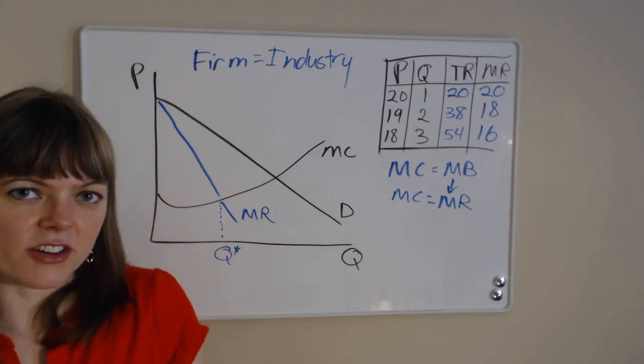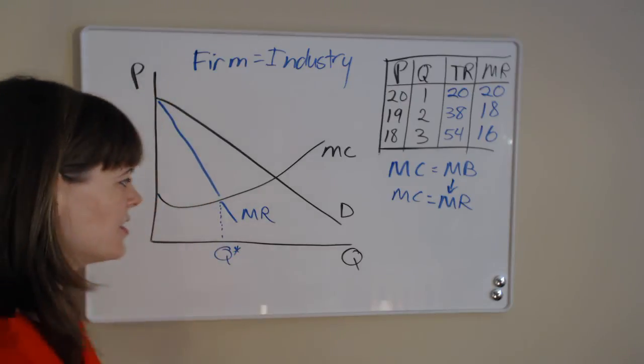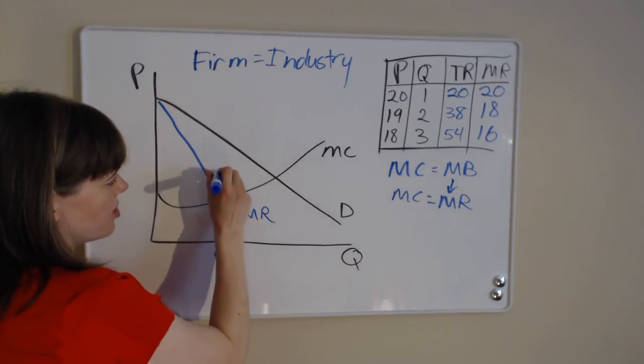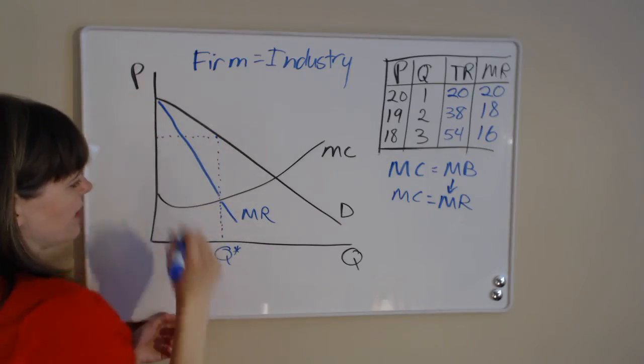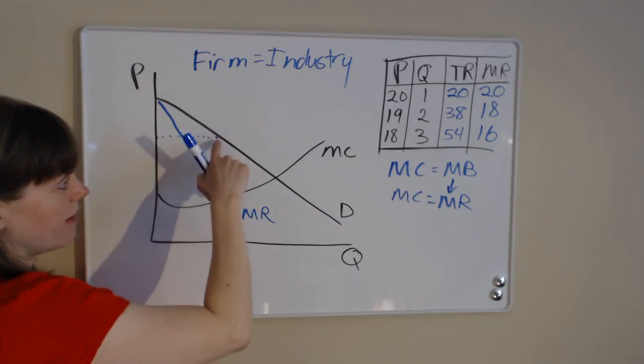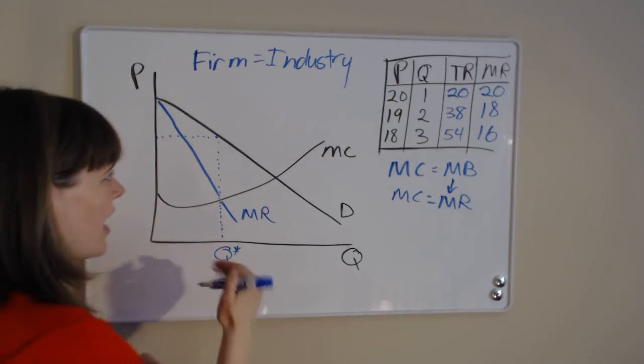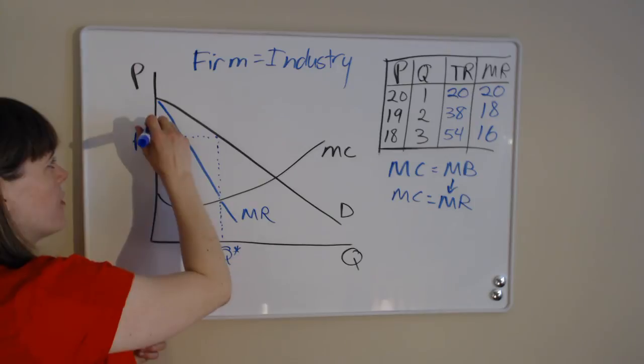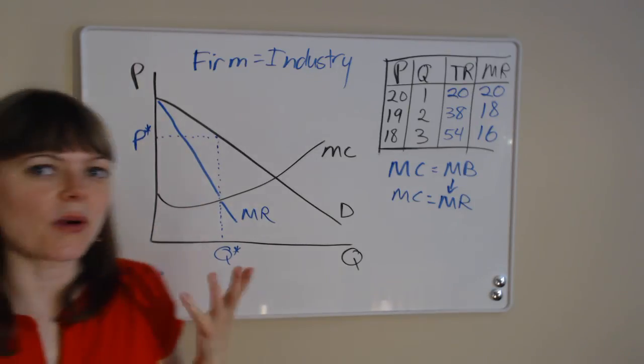So what price are they going to charge at that quantity? Well, they're going to charge the highest price possible. That's always what monopolists do. So the price they're going to charge is going to be way up here on the demand curve to sell all these products. If they charge this price, all of those products will sell. And that's the highest price for which that is true.